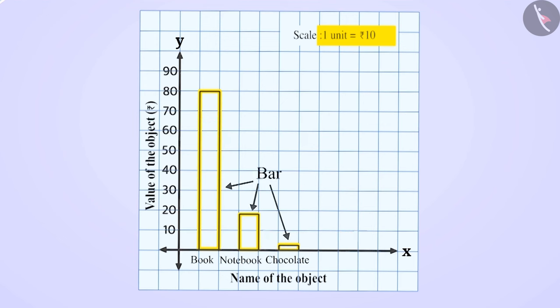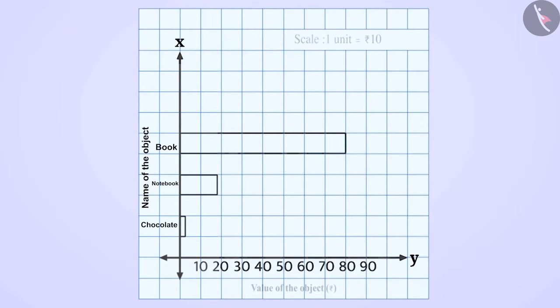These are called bars. It is not necessary that the bar graph should be vertical. Instead, by interchanging the positions of the horizontal x-axis and the vertical y-axis, we can also show the bar graph horizontally.